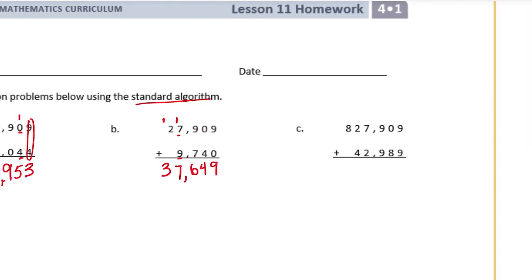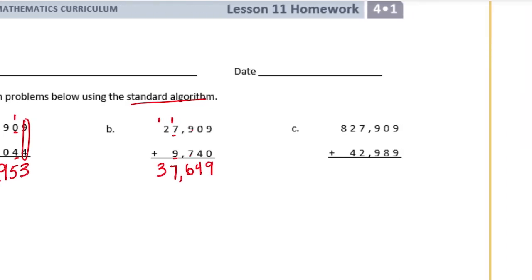Problem C: 827,909 plus 42,989. 9 plus 9 is 18 — put the 8 down, carry the 1; 1 plus 0 plus 8 is 9; 9 plus 9 is 18 — carry the 1; 1 plus 7 plus 2 is 10 — put the 0 down, carry the 1; 1 plus 2 plus 4 is 7; and 8 plus nothing is 8. We get 870,898.